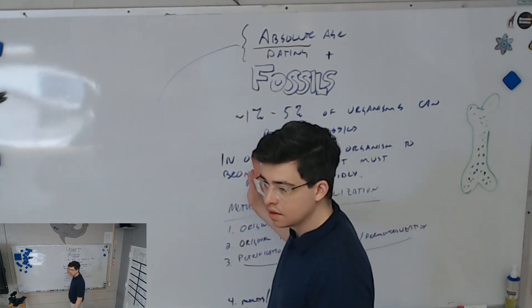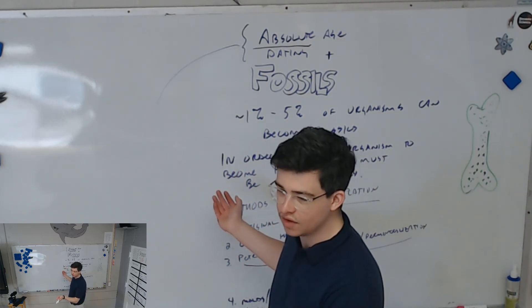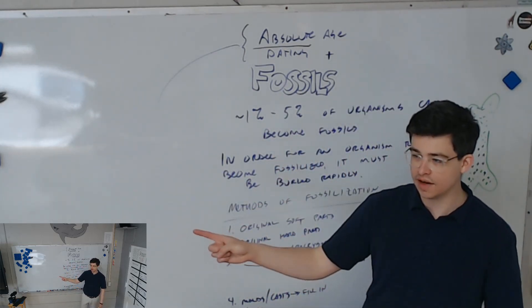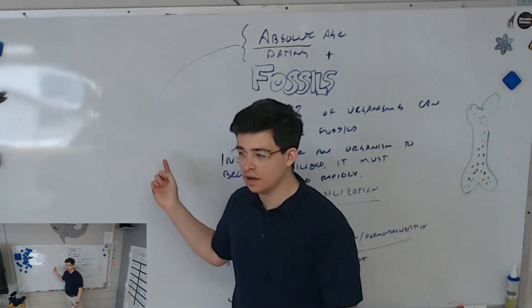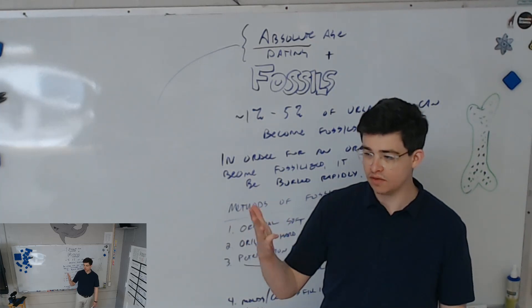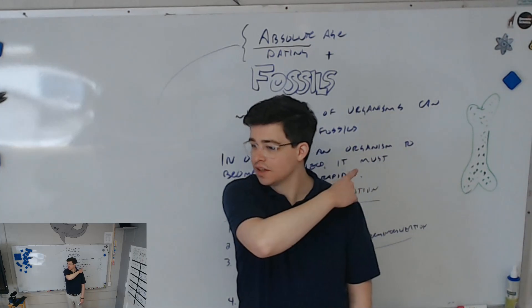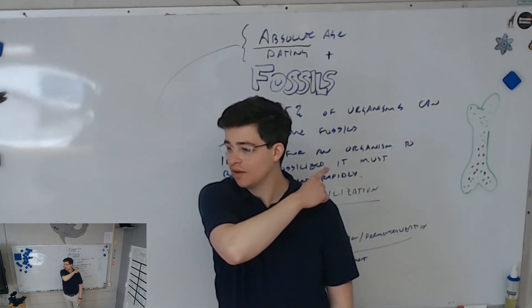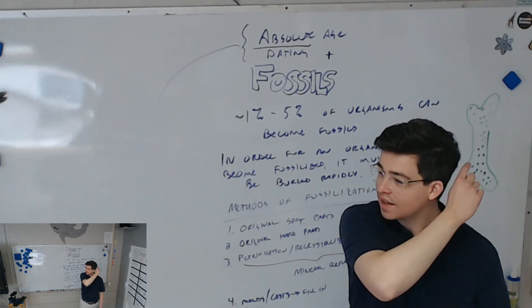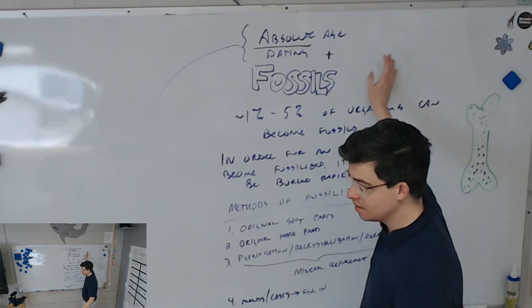Do you have questions about fossils? Do you understand how all four of these things - relative age dating, geologic time, absolute age dating, and fossils - all of them work together to help us learn about the past? Because we can't go there. It's done. I can't ever go back to that day I went to Arby's. I can't go back in time. Same way, we only can learn about this stuff by finding evidence of it now.